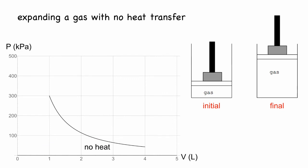When we expand the gas by adjusting the force on the piston and don't allow any heat transfer, then we know the temperature falls and we get a graph like this.